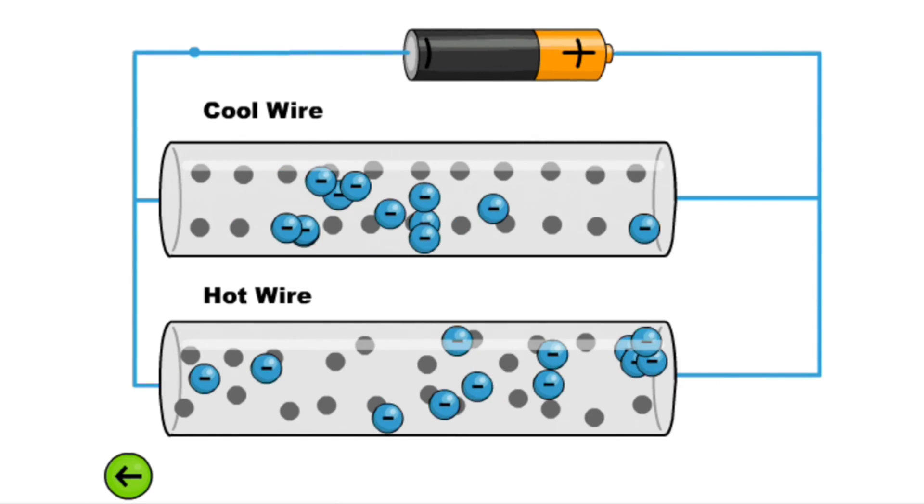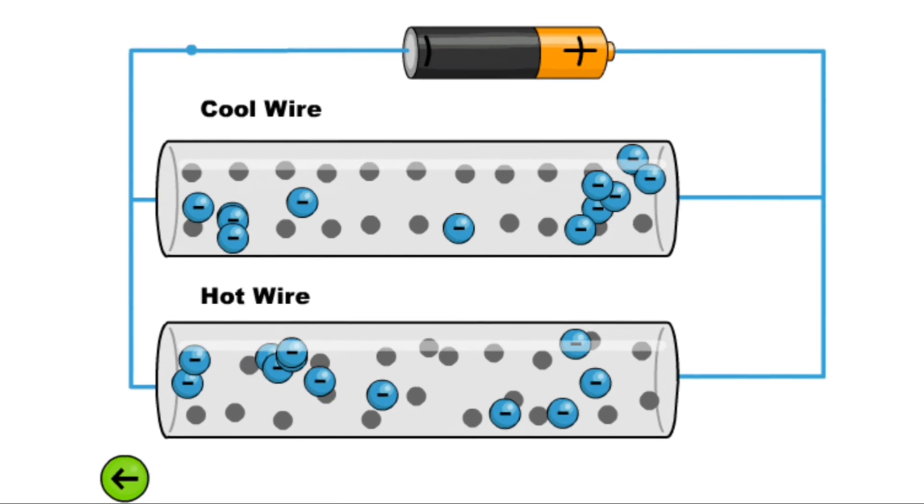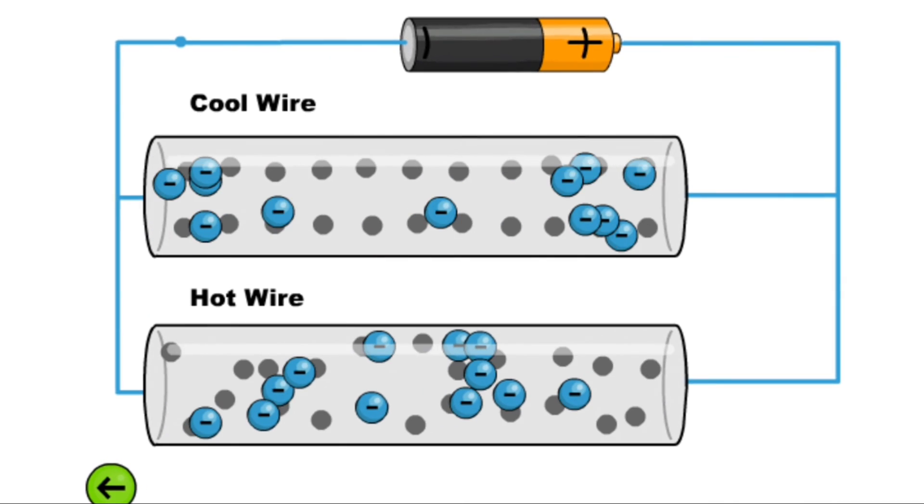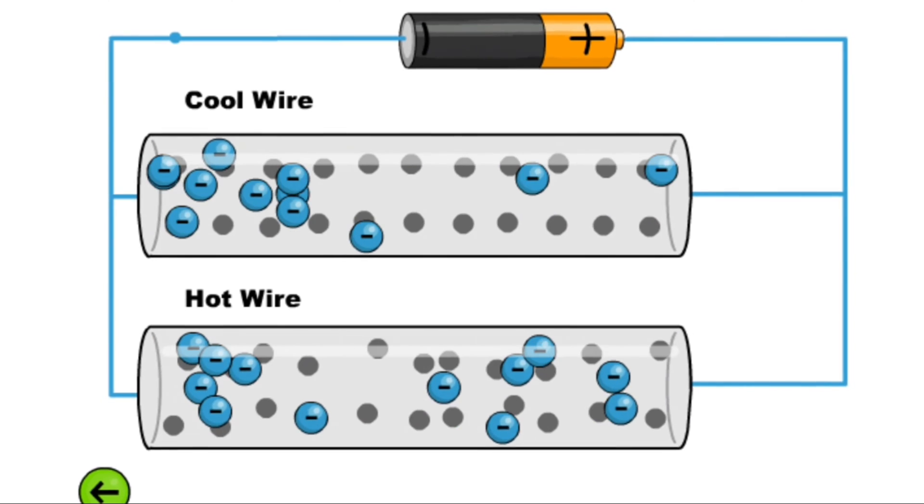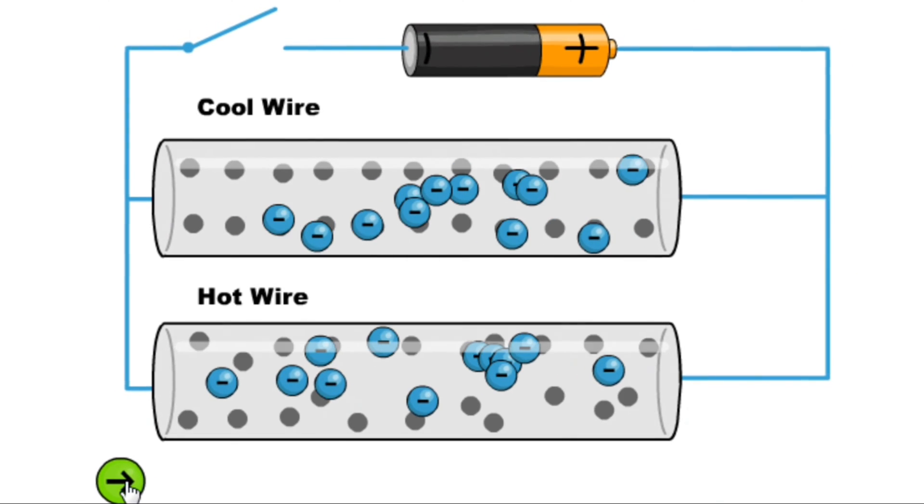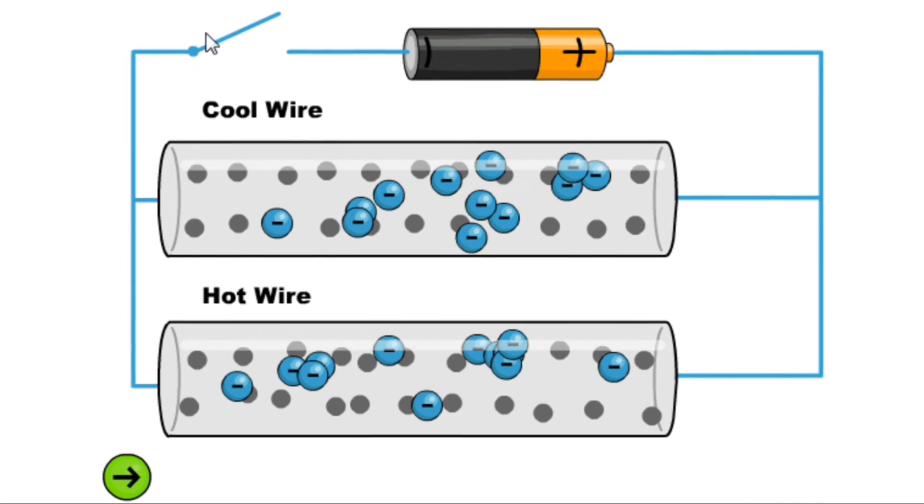An RTD works on this principle of measurement which states that the resistance of a material changes with temperature. As the temperature of the metal increases, the resistance of the metal to electric current also increases.